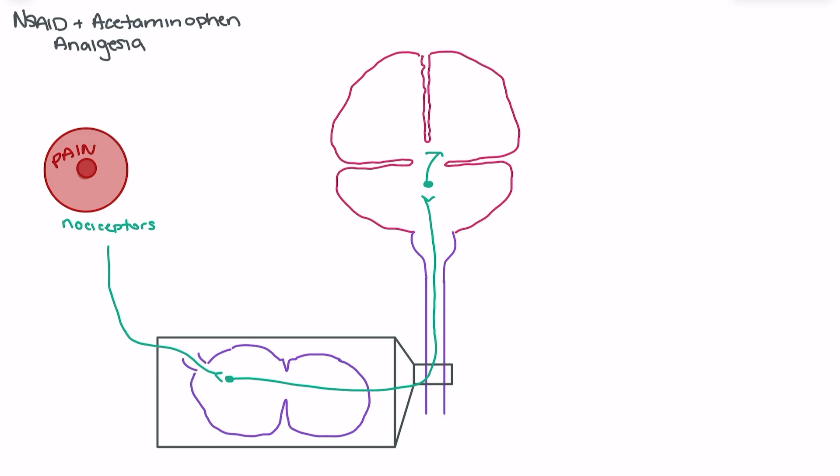So we actually have descending pathways that come down from the brain that have an inhibitory function. They work to inhibit the pain response so that we can continue with any of the vital activities that we need to do to stay alive.